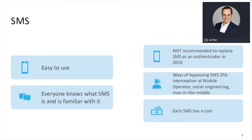SMS has been here for a long time, your customers know how to use it, it's easy, and you don't need to train customers much. On the other hand, each SMS has a cost — whoever built a business case for e-banking or e-commerce payment knows to account for this. As it's been here a long time, there are advanced ways to attack SMS OTP — mobile operator interception, social engineering, or man-in-the-middle attacks. In Europe, PSD2 is pushing SMS out, as it's not at the level required for PSD2 compliance for dynamic linking or strong customer authentication.